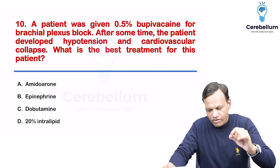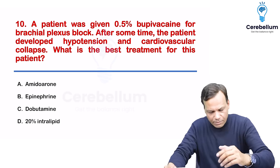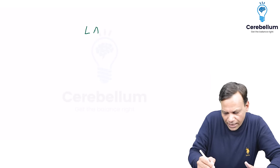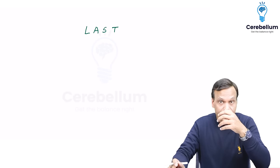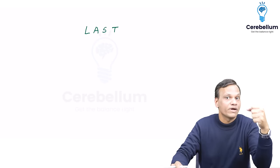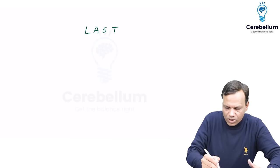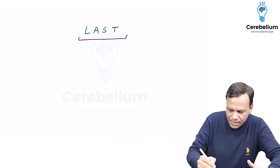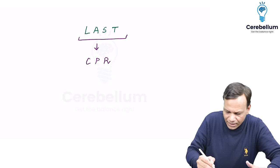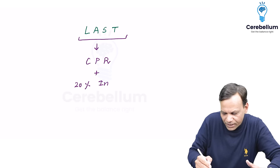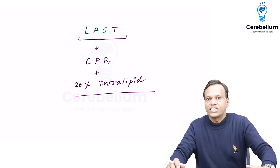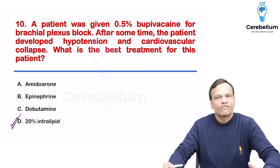A patient was given 0.5% bupivacaine for brachial plexus block; after some time the patient developed hypotension and cardiovascular collapse. This is a classical case of local anesthetic systemic toxicity (LAST). The local anesthetic entered the bloodstream causing toxicity to heart and brain, with seizures and cardiovascular collapse. We need CPR and the drug of choice is 20% intralipid — the local anesthetic gets trapped in the lipid portion. The answer is 20% intralipid.